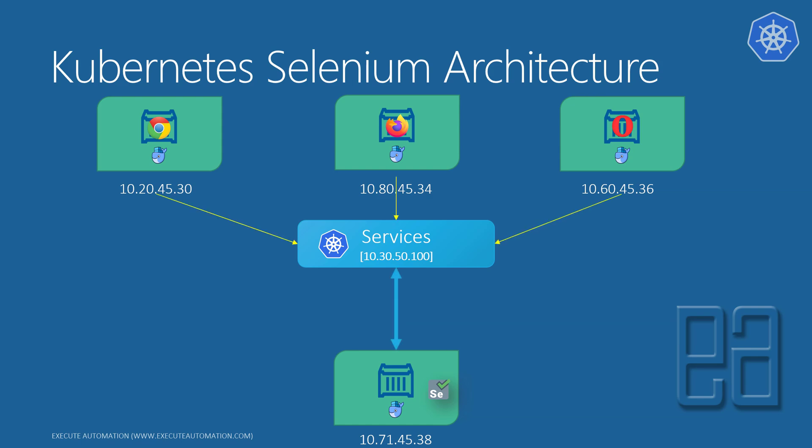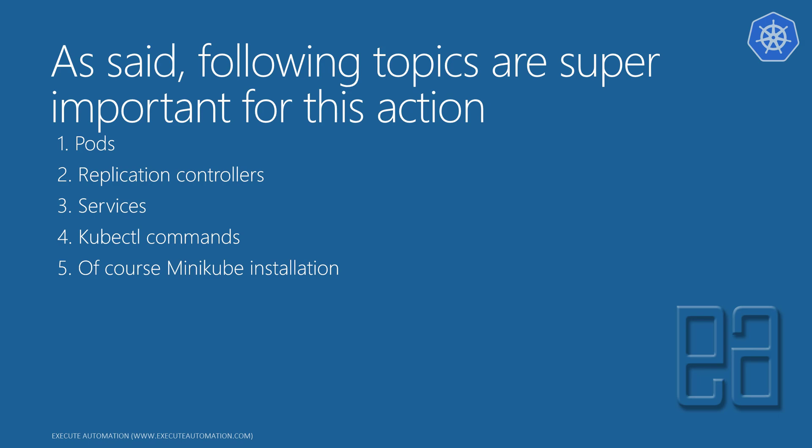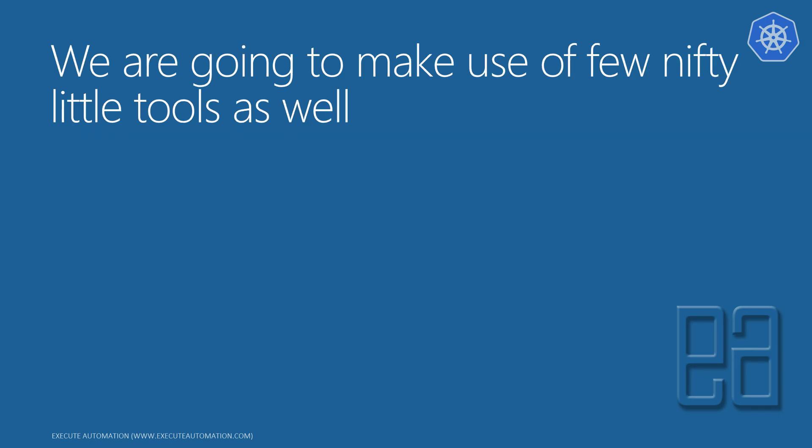This is how the Kubernetes Selenium architecture is going to look, and this is what we are going to build in this section. The following topics are important prerequisites: what are pods, what is the replication controller, what are services, basic kubectl commands, and of course minikube installation on your machine. Make sure you have all these set up already. If you have skipped section one, please go ahead and watch it, as those are the stepping stones for this section.